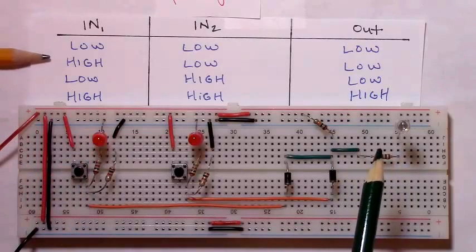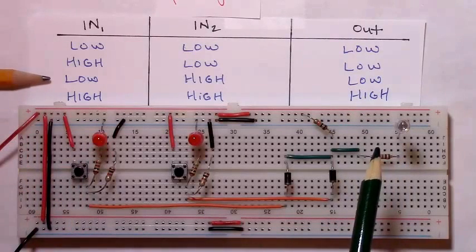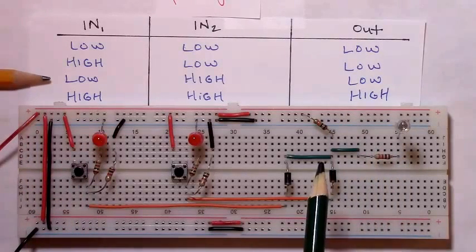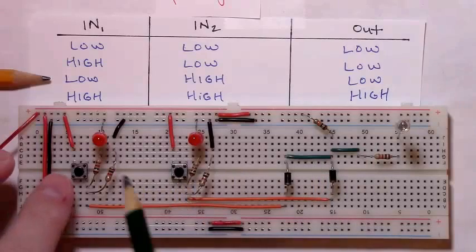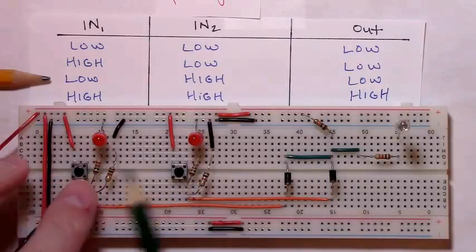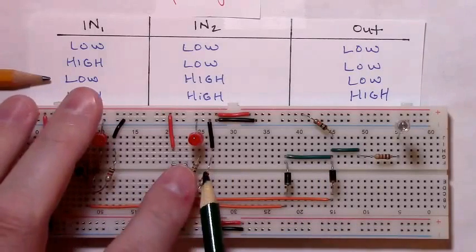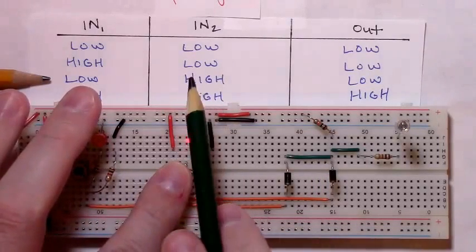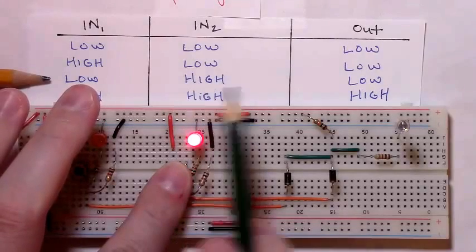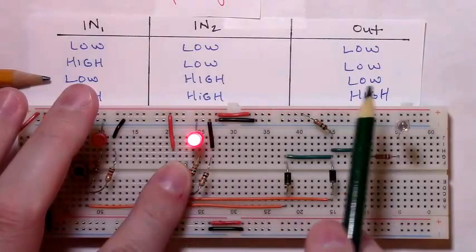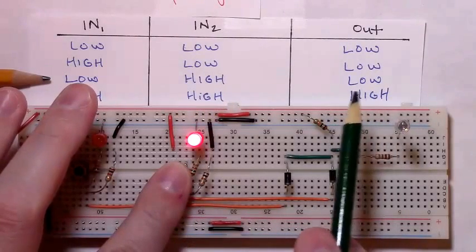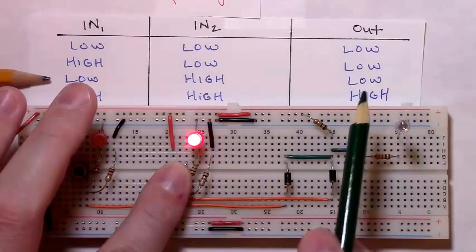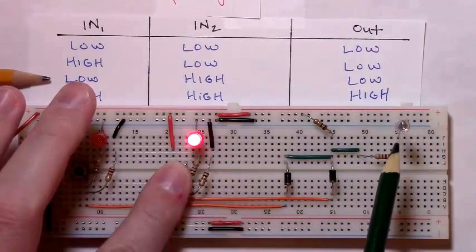We can check the third possibility: input one is low and input two is high. Then we should expect the output to be low, and it is.